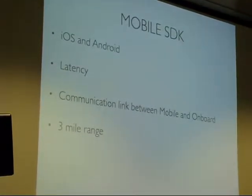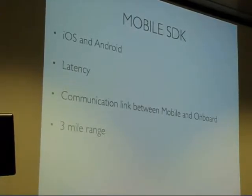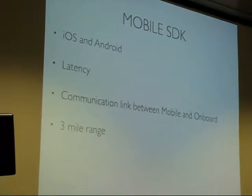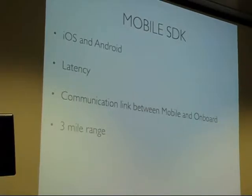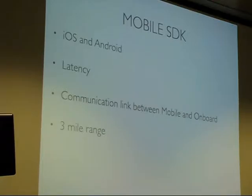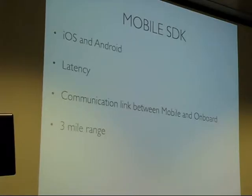The Mobile SDK is a completely separate DJI-based SDK supporting iOS and Android. You typically write Mobile SDK applications where latency is not really an issue — for just sending a command, starting up, that kind of stuff. It has a very rich API. For closed-loop control or heavy applications like image processing, you'd rather do that onboard. We have a communication link between the mobile and the onboard SDK, which allows us to get the full 3-mile range. You could have your aircraft sitting about a mile away and just press a button to send it on a mission and come back.